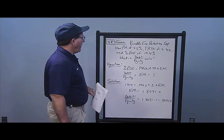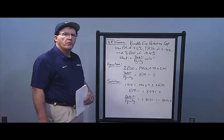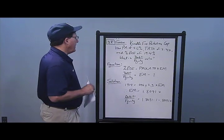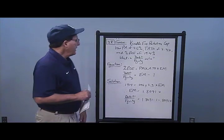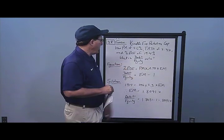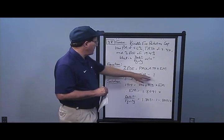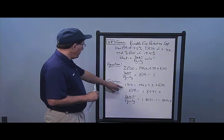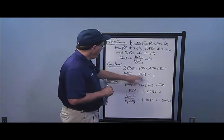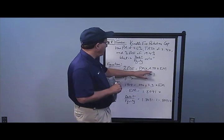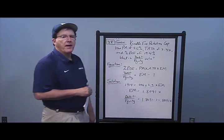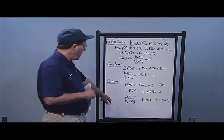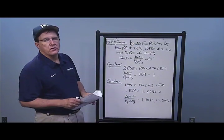In Problem 8, Kindle Fire Protection Corporation has a profit margin of 4.6%, total asset turnover of 2.3 times, and return on equity of 19.14%. They want to know the debt-to-equity ratio. Using ROE equals profit margin times asset turnover times equity multiplier, I fill in the givens: 0.1914 equals 0.046 times 2.3 times the equity multiplier. This gives an equity multiplier of 1.8091 times. Subtracting one gives a debt-to-equity ratio of 0.8091 times. Those are the answers to Problem 8.